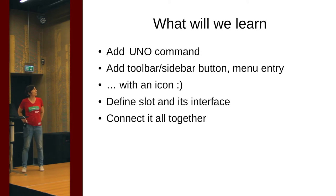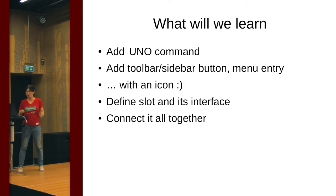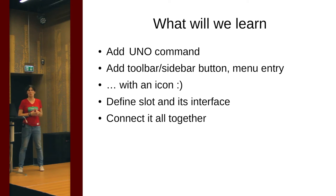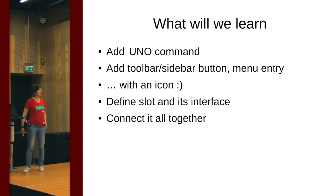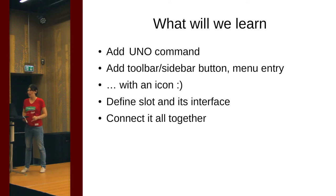Here's an outline of what I will show. We will learn how to add a new UNO command to execute some work around the user interface, how to add a toolbar and sidebar button or menu entry, and how to do that with an icon, because it's boring and not fancy without pictures. We will learn to define a new slot and its interface and connect those two together. I'm intentionally not covering widget layout or UI files, because that has been extensively covered elsewhere and is well documented.